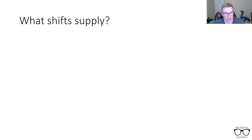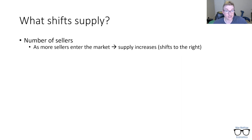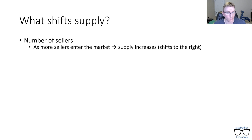What shifts supply? This is not a comprehensive list, just things that come to mind. First is the number of sellers. As more sellers enter the market, we assume supply increases, represented by a shift to the right. If I'm asking just one person to sell me their phone, the quantity supplied is one. As I start asking more people — a classroom, a whole state — at any given price I would offer, more people would be willing to sell their phone. That is a shift to the right of supply.